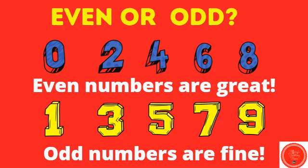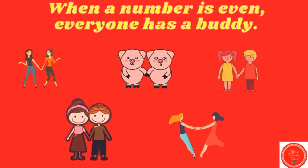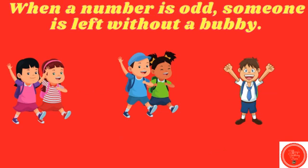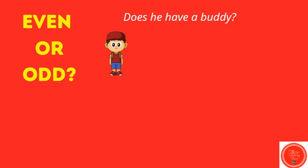Let's talk about odd or even numbers. Zero, two, four, six, eight — even numbers are great. One, three, five, seven, nine — odd numbers are fine. When a number is even, everyone has a buddy. When a number is odd, someone is left without a buddy. Here is one boy. Does he have a buddy? No, he doesn't. That means one is an odd number.